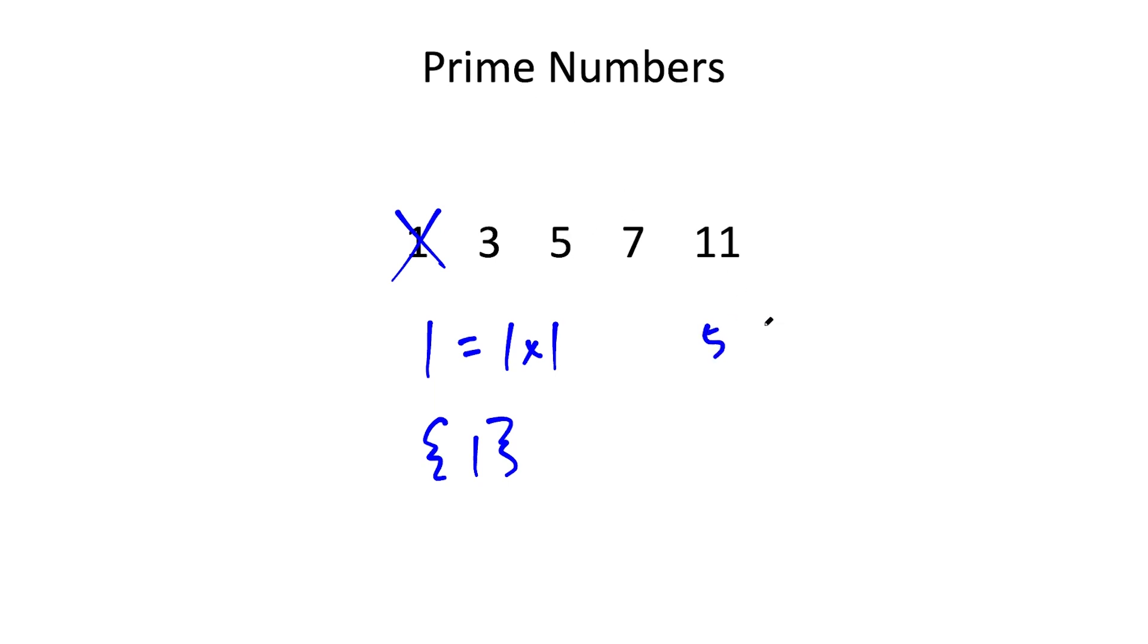For example, 5 is prime because the only factors of 5 are 1 and 5. The factors of 5 are 1 and the number itself. That's what it takes for something to be prime—it has to have exactly two factors.